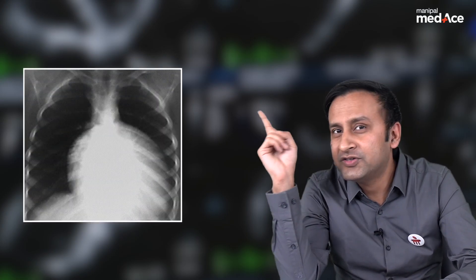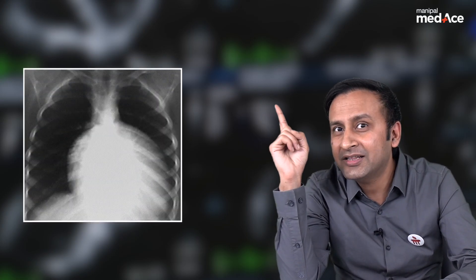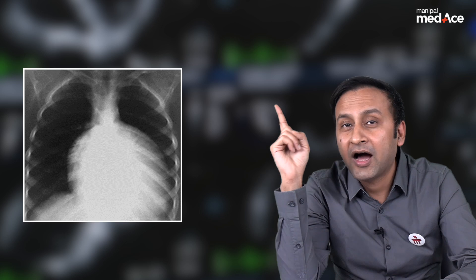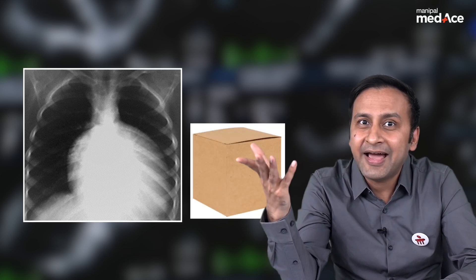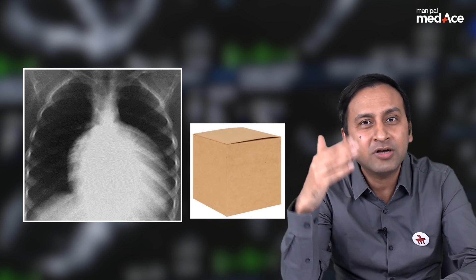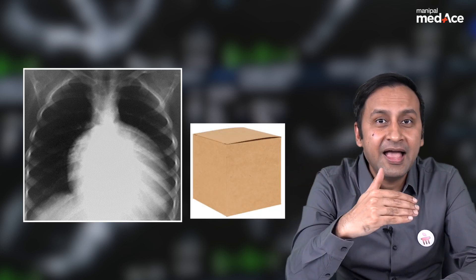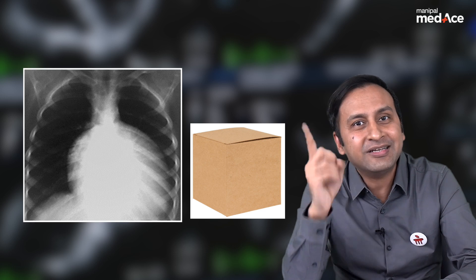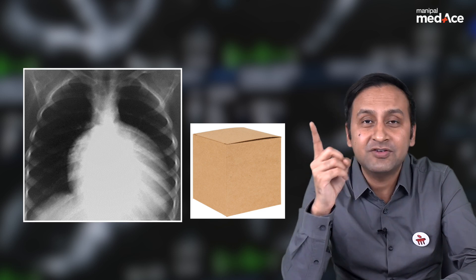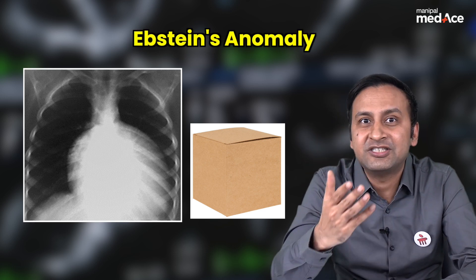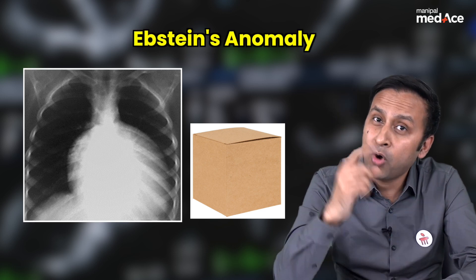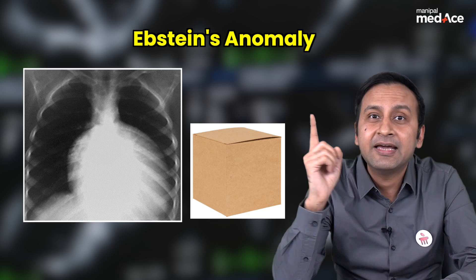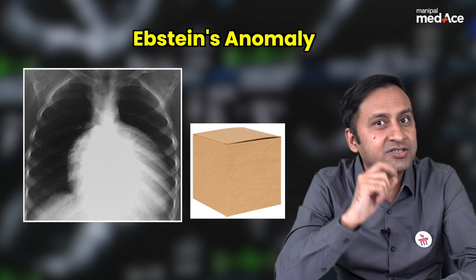Let's have a look at our second case. What do you see in this case? Look at the heart — it is typically looking like a box. Box starts with B, and there is only one congenital heart disease which has a B in its name: that is Ebstein's anomaly. So box-shaped heart is seen in Ebstein's anomaly.